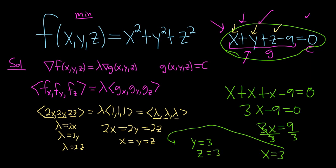Now we're done. We just take these numbers and plug them in here and that's going to be our minimum. So f(3,3,3) is going to be 3 squared plus 3 squared plus 3 squared, so 9 plus 9 plus 9 which is 27, and that is the minimum.